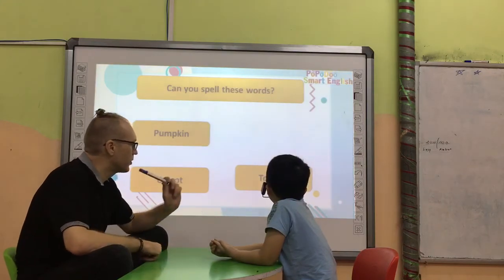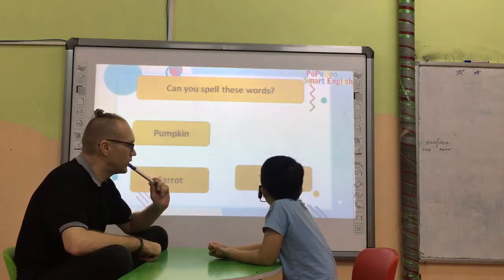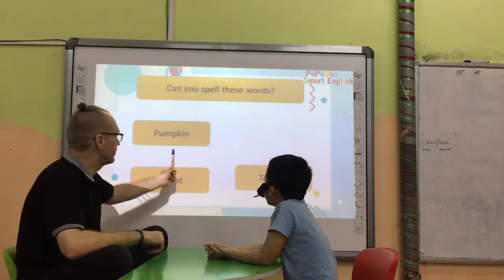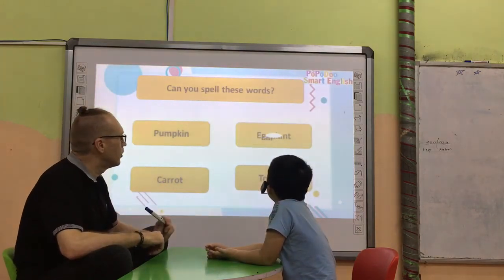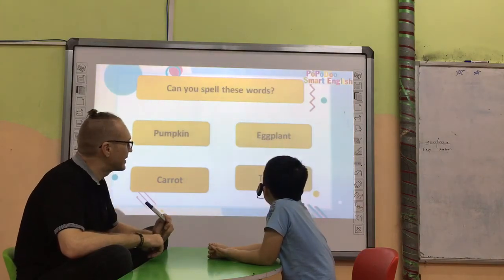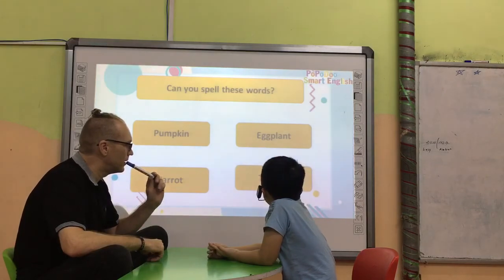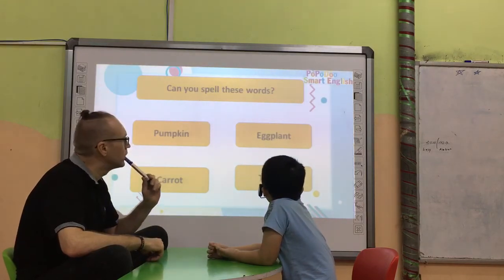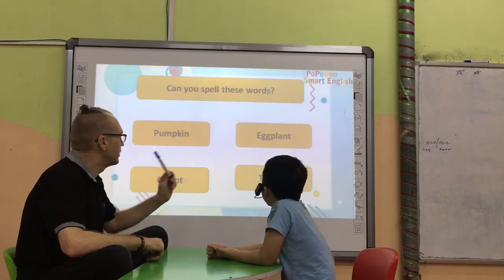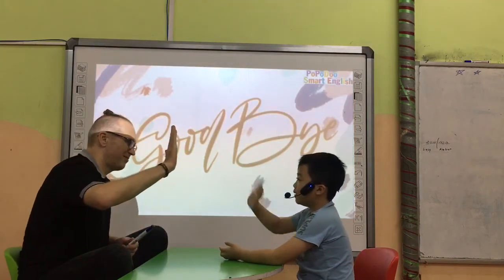How do you spell it? D, O, N, A, D, O. Perfect. What is this? D, D, A, D, E, D, I, D, D. Thank you very much. Goodbye then. Bye bye.